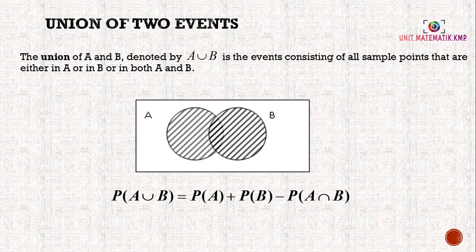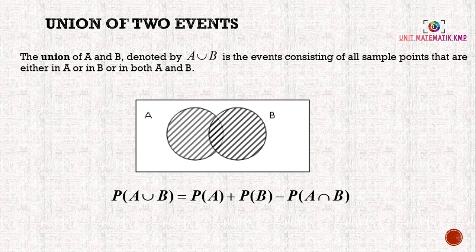The union of two events. The union of A and B, denoted by A ∪ B, is the event consisting of all sample points that are either in A or in B or in both A and B.